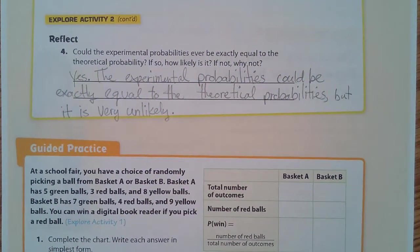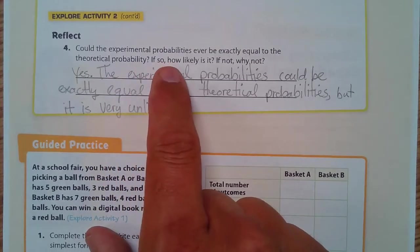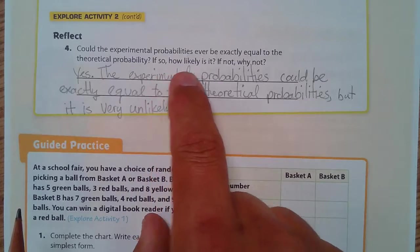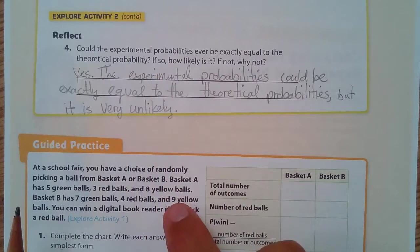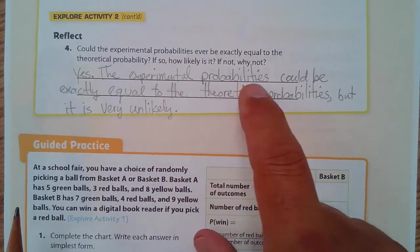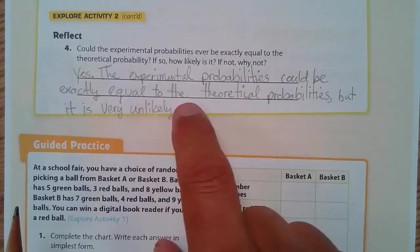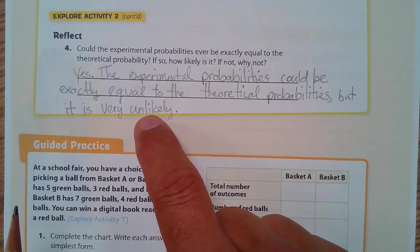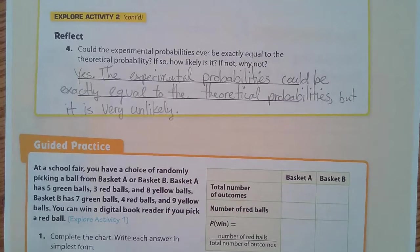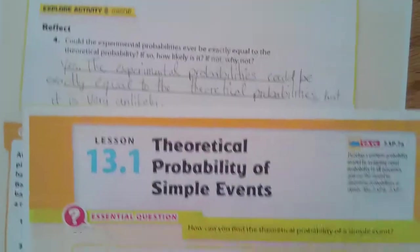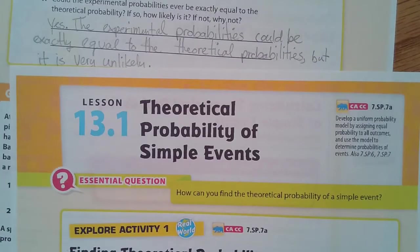Now, to reflect. Could experimental probabilities ever be exactly equal to the theoretical probability? If so, how likely is it? If not, why not? Well, yes. It could match it exactly. The experimental probabilities could be exactly equal to the theoretical probabilities, but it's not very likely. Not unless you got lots and lots of trials. It's pretty hard to actually get exactly that amount. And so that is what you need to know about theoretical probabilities of our simple events. Thank you for watching.